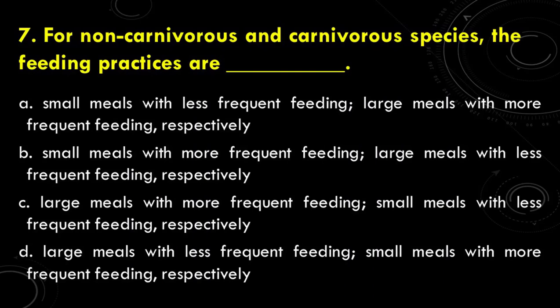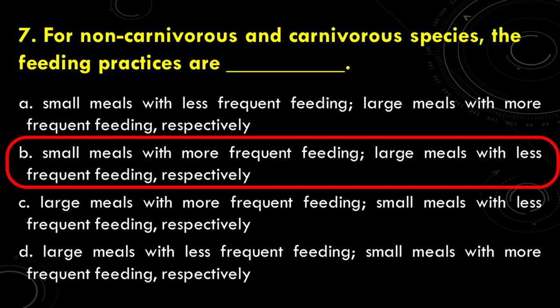The next question: what is the feeding practice for non-carnivorous and carnivorous species respectively? The correct answer is B: small meals with more frequent feeding for non-carnivorous, and large meals with less frequent feeding for carnivorous, respectively.